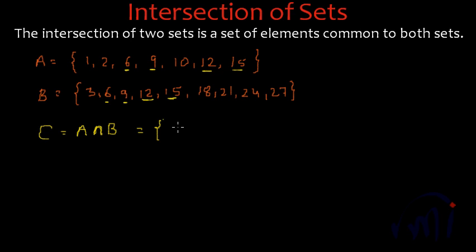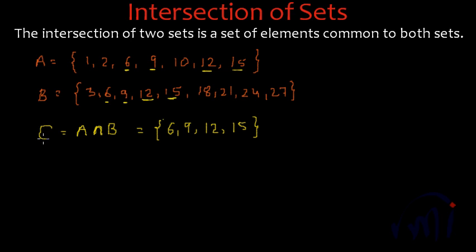So A intersection B will be 6, 9, 12 and 15. These are the elements which are there in both the sets and that is why they are in the set of their intersection also.